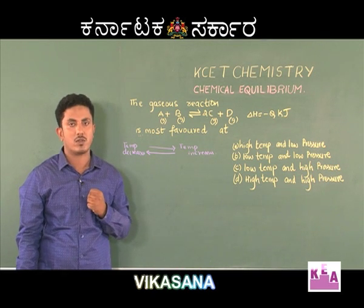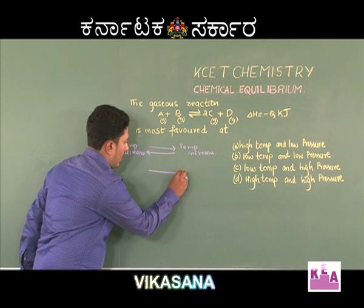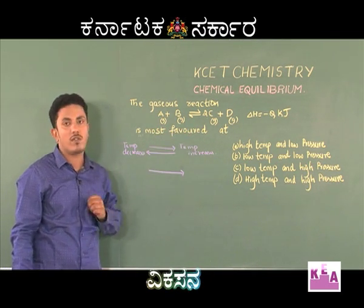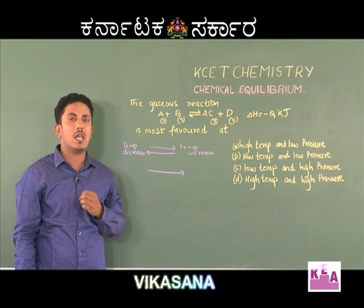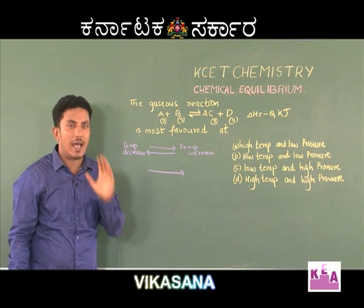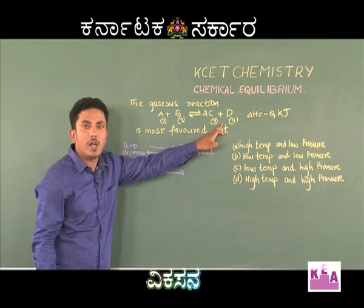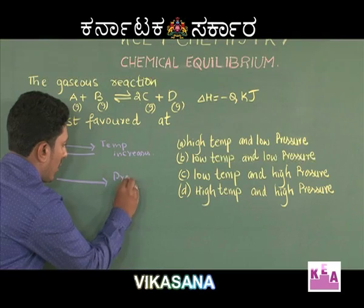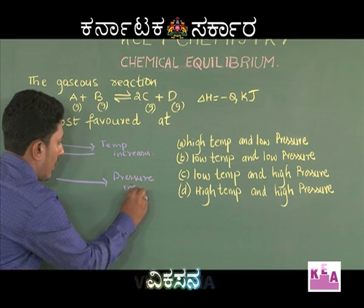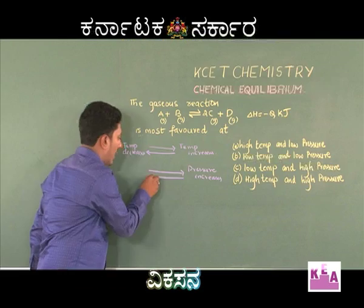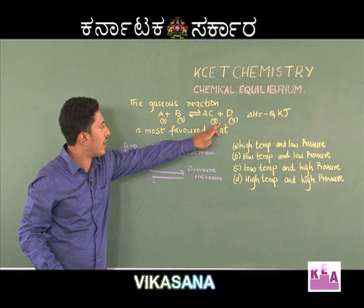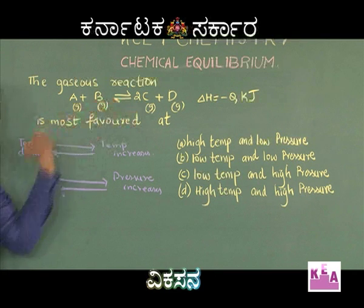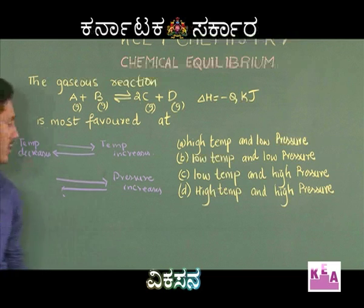We will now look at the pressures. If you carefully examine the equation, 2 moles of gaseous reactants give 3 moles of gaseous products, and pressure is directly proportional to number of moles. As a result, the forward reaction is accompanied by an increase in the number of gaseous moles, which indicates the pressure of the system increases. In the backward reaction, 3 moles of products give 2 moles of reactants, hence the pressure of the system decreases.